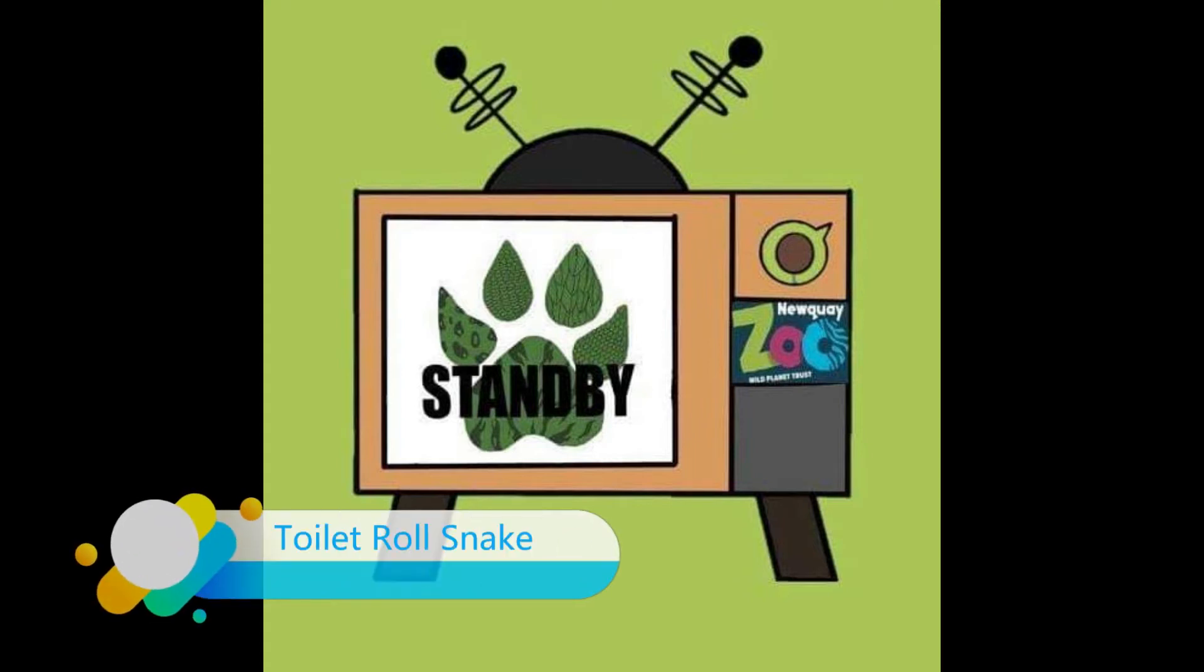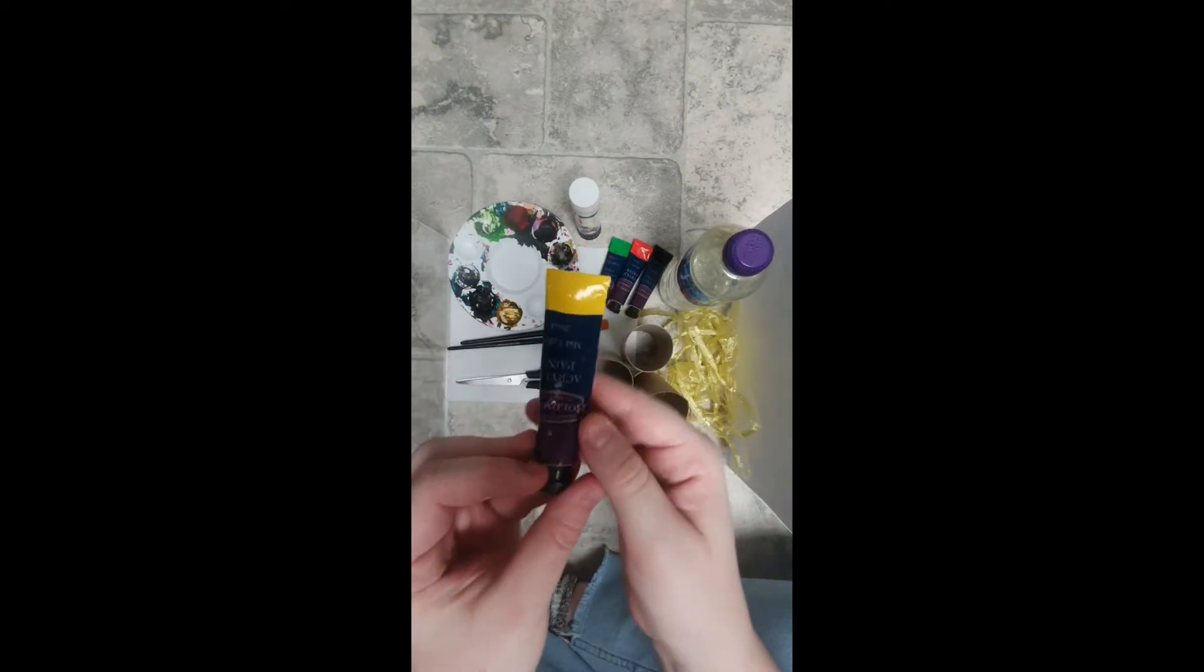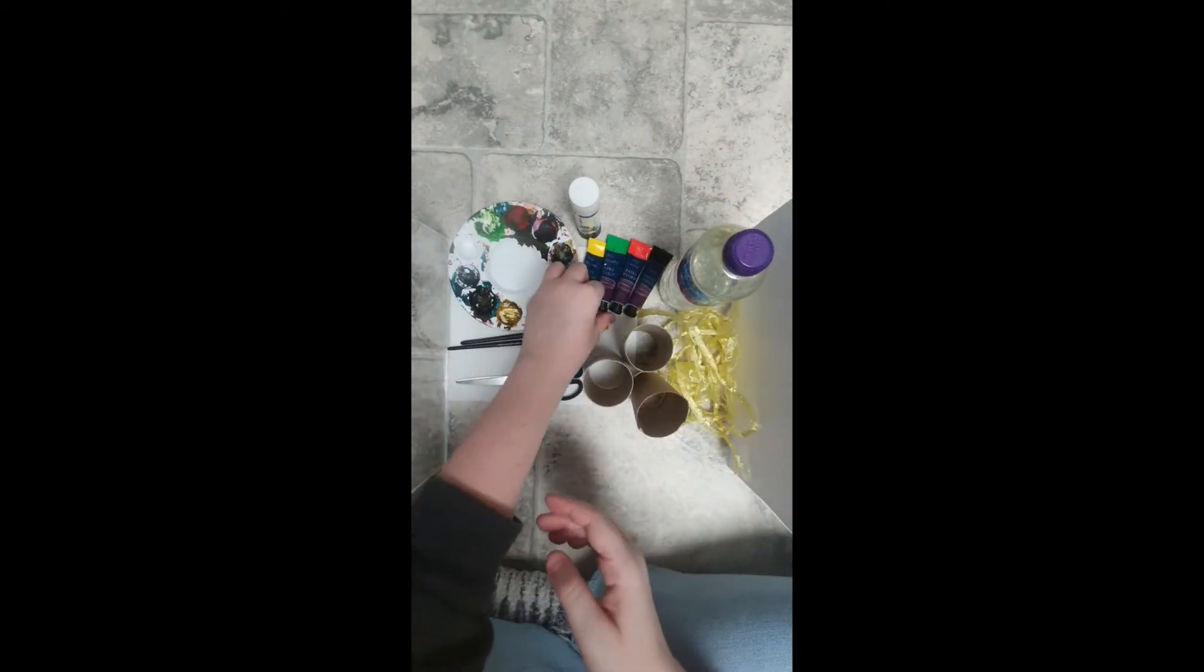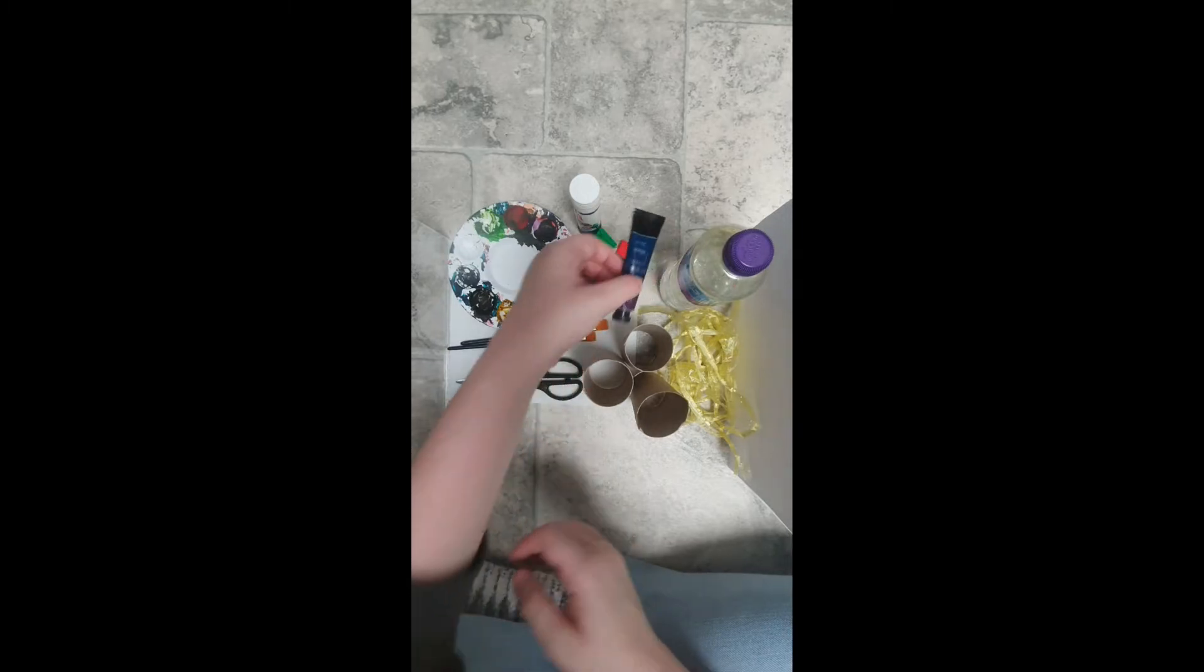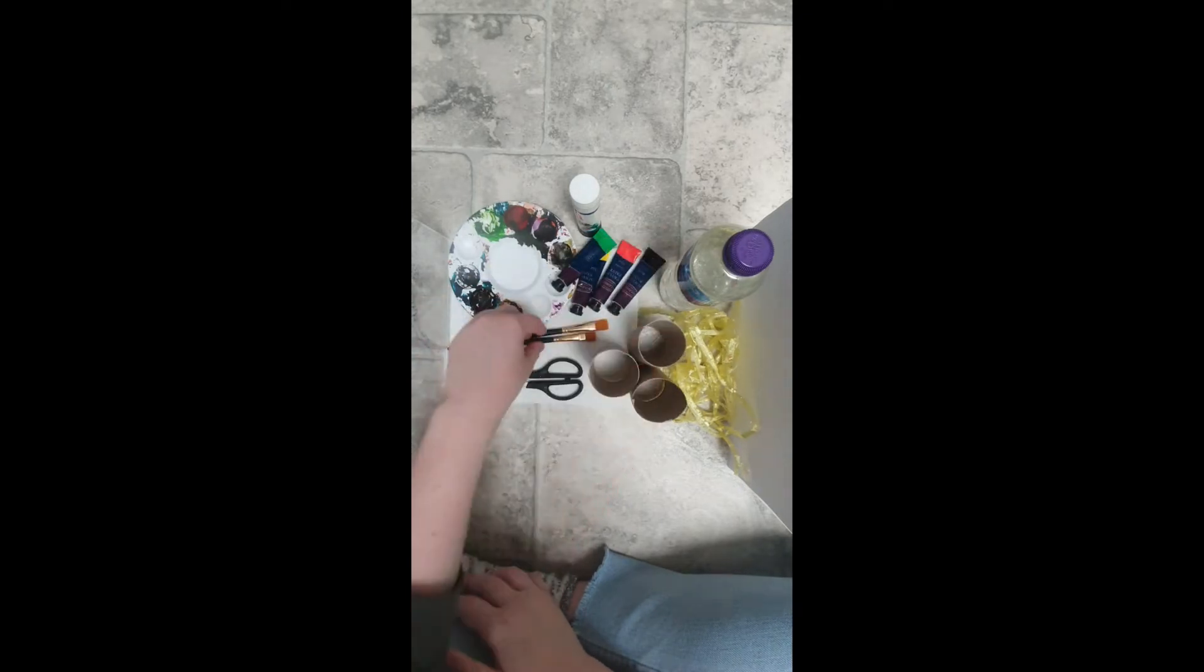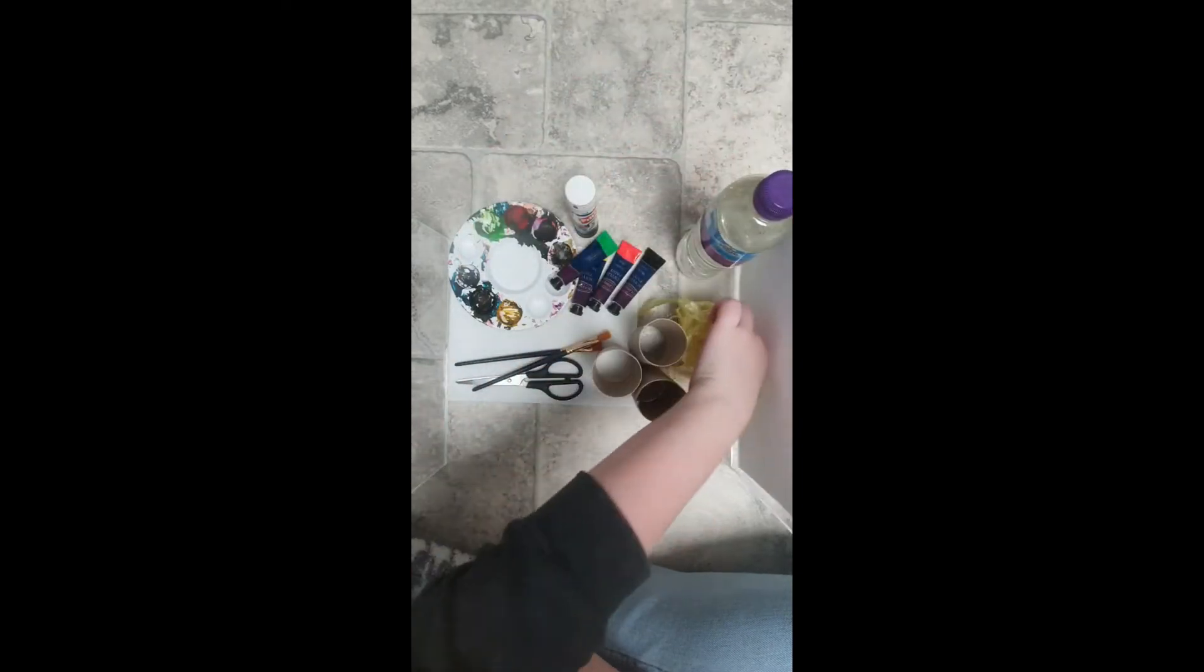You'll need green, red, black toilet tubes, paint brushes, a glue stick, some clean water, some string, a piece of paper, and some scissors. You should have these four colors.